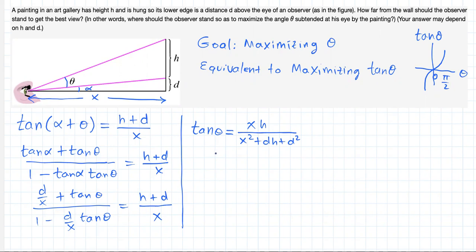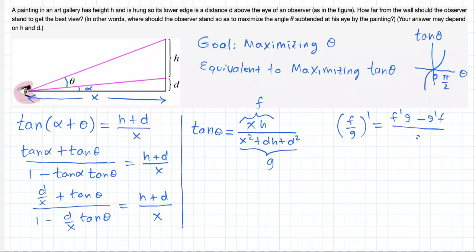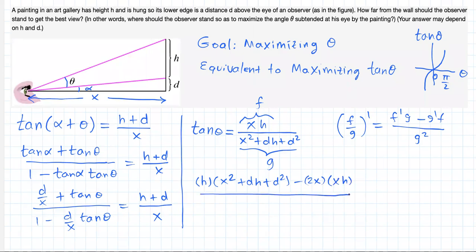Now I'm going to maximize tangent of theta — that will in turn maximize theta — by taking the derivative of this function, setting it equal to 0, and solving for x to get the critical value. For that I'll use the quotient rule: derivative of f over g is f prime g minus g prime f, all over g squared. So the derivative is h times g minus 2x times f times h, all over g squared, set equal to 0.